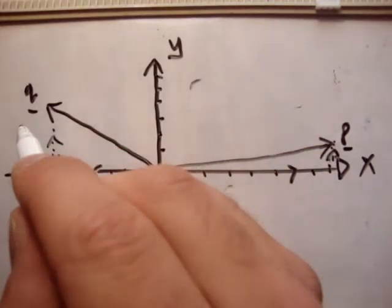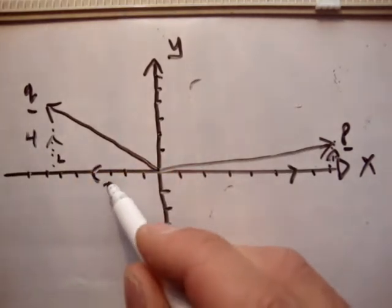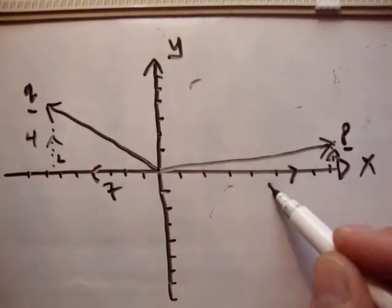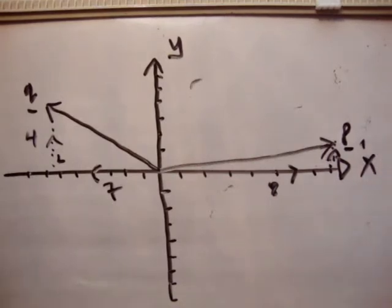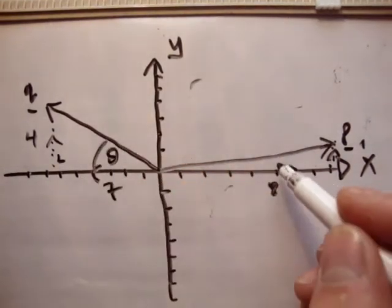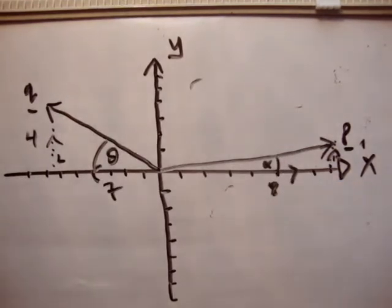So let's just put those in. We have 4, 7, 8, and 1. I'm going to call this angle here theta, and this angle here alpha. You can see that we don't need to resolve it — it's already resolved.